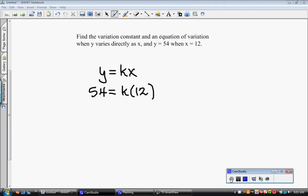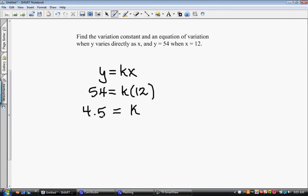So we're going to divide both sides by 12. So k is going to be equal to 4.5 because 54 divided by 12 is 4.5. Now k represents what we call the variation constant. So in this particular problem, we've actually found the first part of what they've asked for. They have said, find the variation constant. So that's what we've done. That's k.